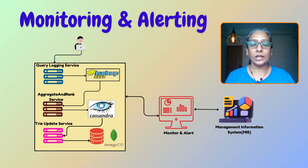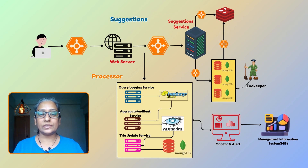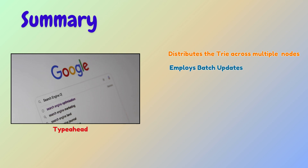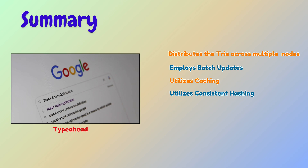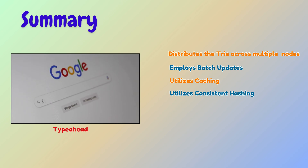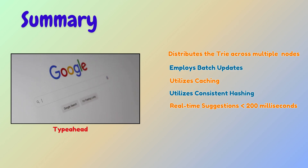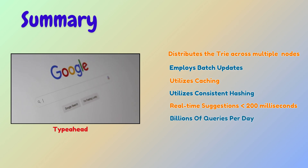To ensure smooth operation, we integrate monitoring and alerting systems that track the success of batch processing and trie updates. Here is the complete system design diagram. This architecture distributes the trie across multiple MongoDB databases, employs batch updates, and utilizes caching and consistent hashing. As a result, this system, similar to Google's scale, can deliver real-time search suggestions in under 200 milliseconds and handle billions of queries per day while maintaining speed and accuracy.